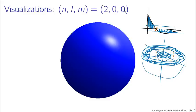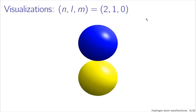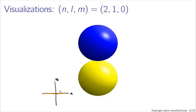If we go to cases where l and m are not equal to zero, you get something like this — l equals 1 and m equals 0. Now we have two distinct regions. Drawing this in cross-section in the xz plane, there is a region where the particle is unlikely to be found on the xy plane, which leaves us with two regions — one above the plane and one below the plane — where the particle is likely to be found.